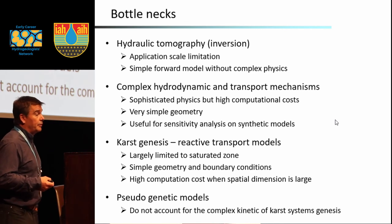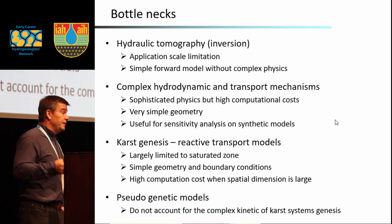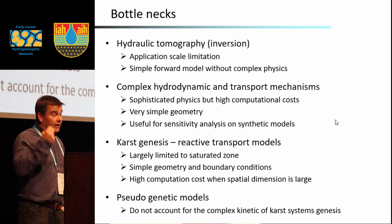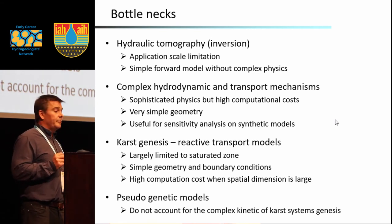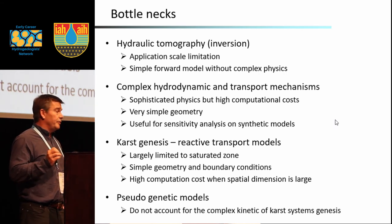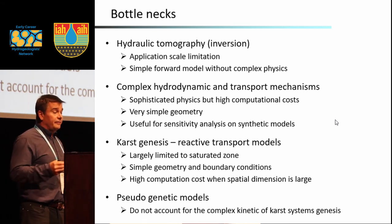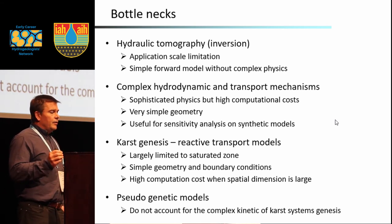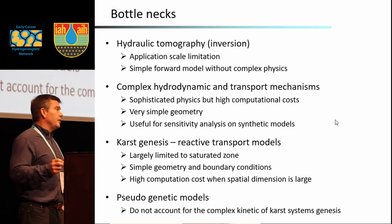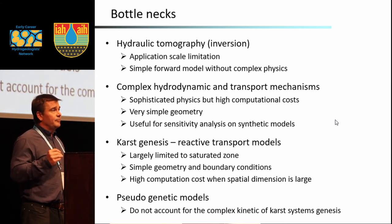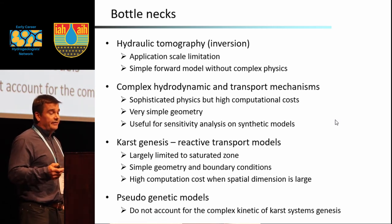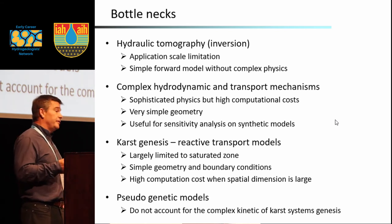Some bottlenecks: regarding hydraulic tomography, the scale is pretty limited and the physics of the model is simple with a simple forward model. Regarding complex hydrodynamic and transport models, the physics is more sophisticated but they have high computational cost and generally use very simple geometry, though they are useful for sensitivity analysis. For karst genesis and reactive transport models, they are largely limited to the saturated zone, simple geometry or boundary conditions, and require high computational cost when dimensions become large. Pseudogenetic models do not account for the complex kinetics of karst system genesis. All of these models have advantages and disadvantages.